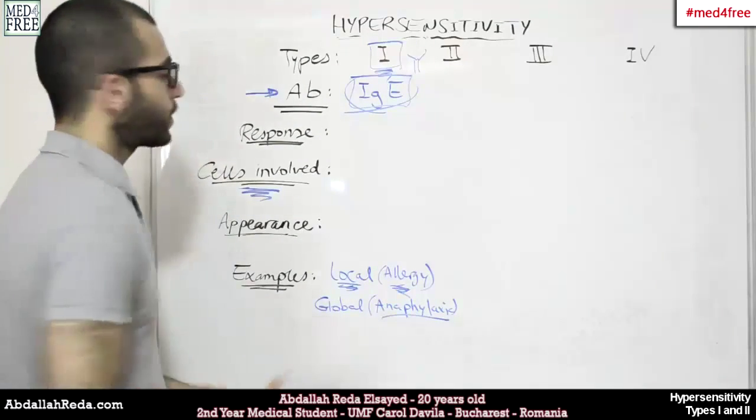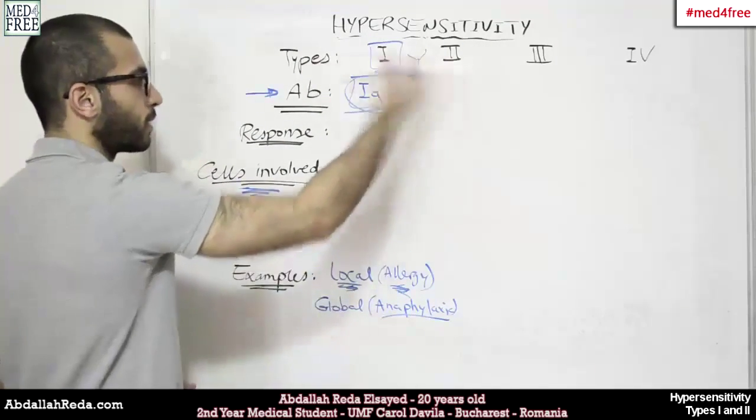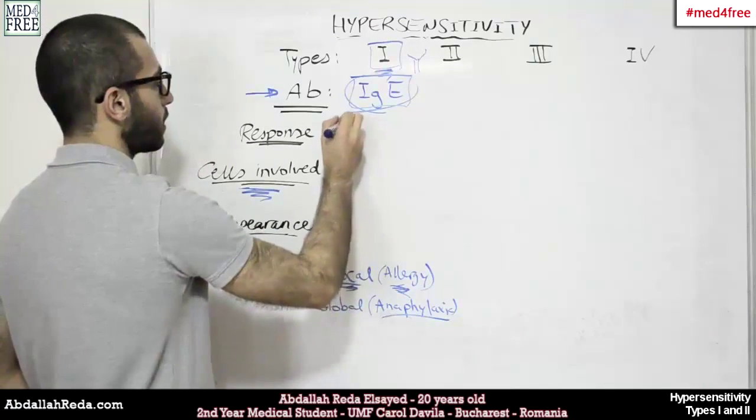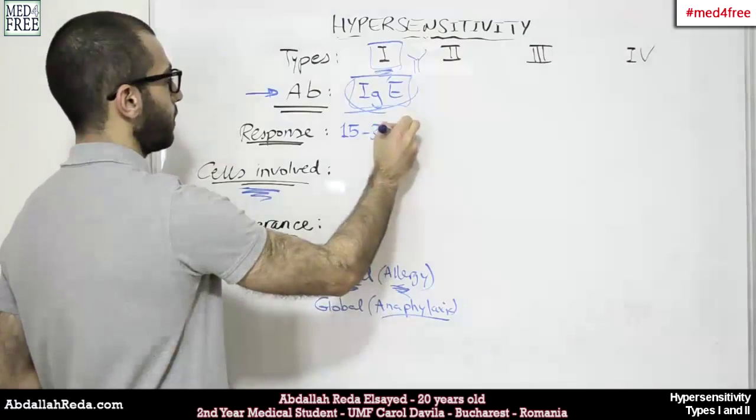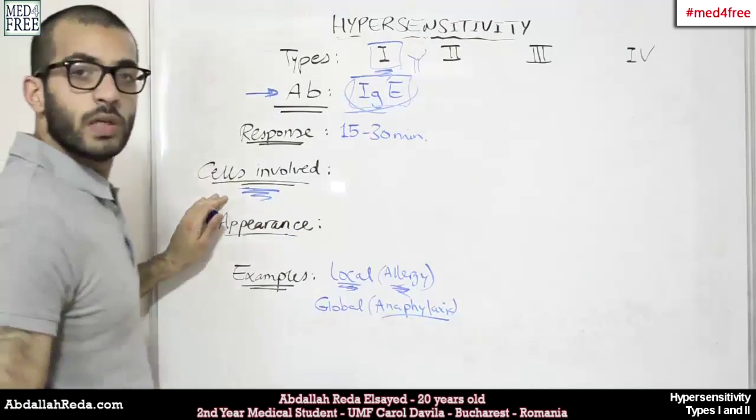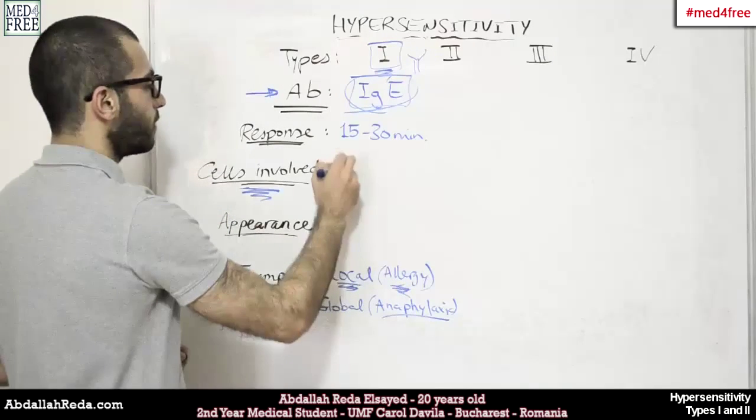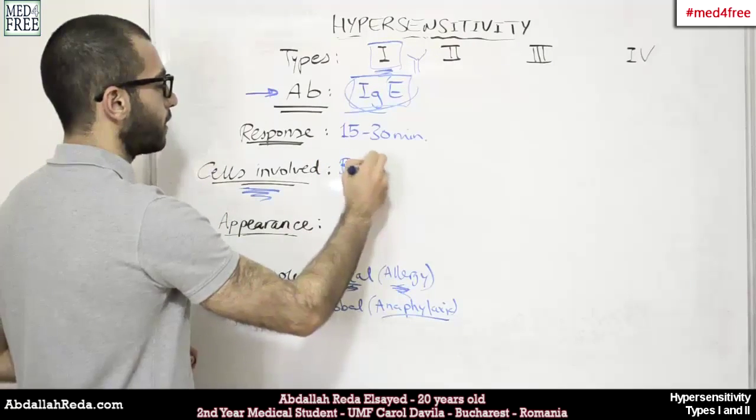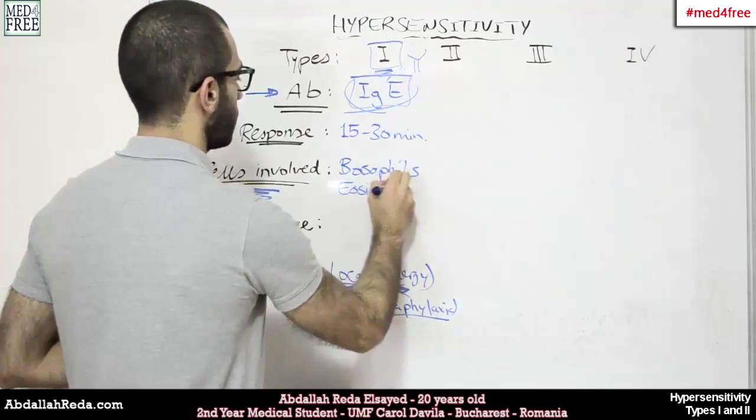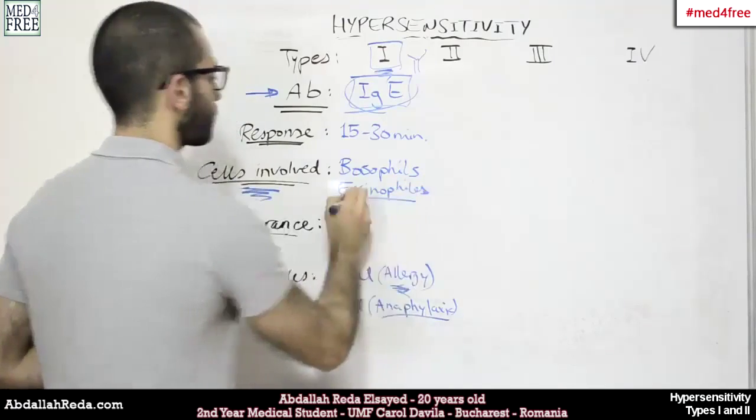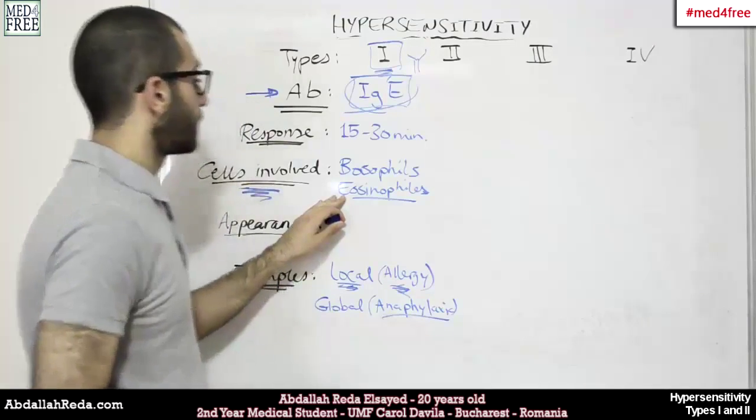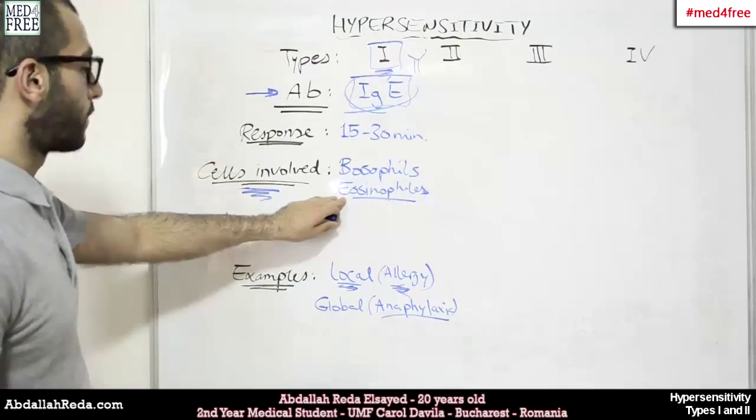The allergic response, relatively speaking to the other types of hypersensitivity, would require a short amount of time, so 15 to 30 minutes. And the cells involved would have basophils and eosinophils. Basophils and eosinophils will be integrated in such a reaction.